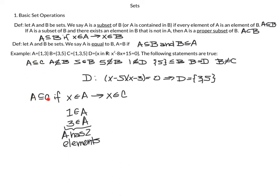First statement: A is a subset of C. By definition, A ⊆ C if X ∈ A implies X ∈ C. A has two elements, 1 and 3. The element 1 is also in C, and 3 is also in C. Since both elements of A are in C, the condition is met and A is contained in C.